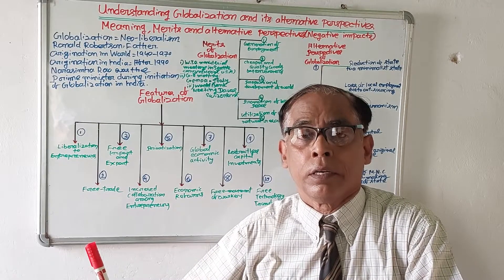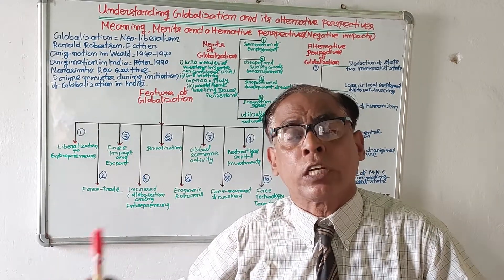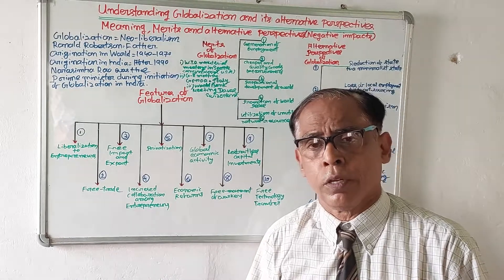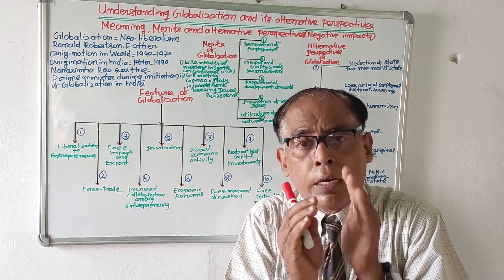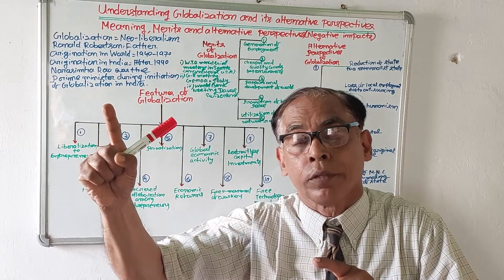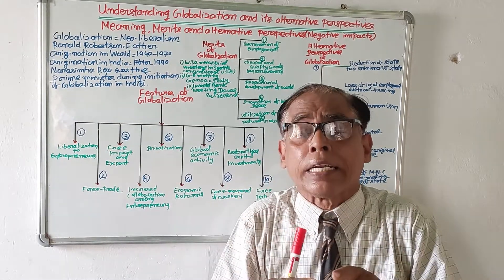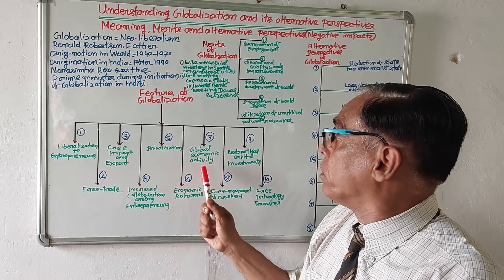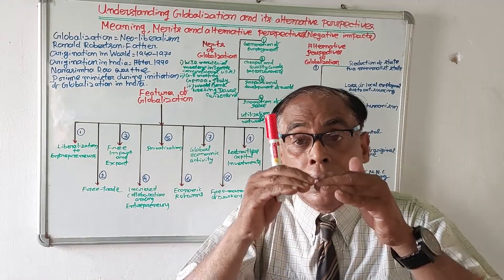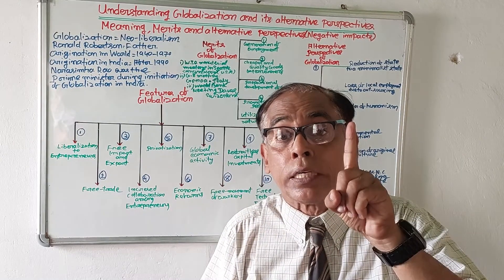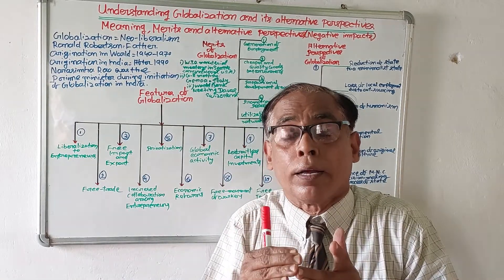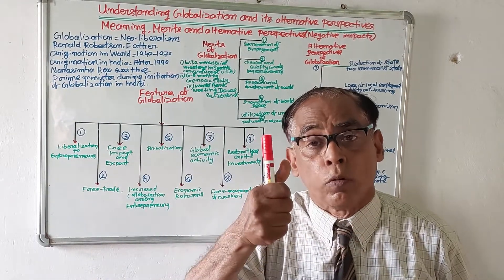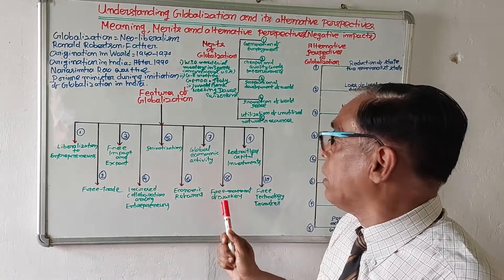The fifth feature is privatization. In globalization, privatization will be encouraged — businessmen and capitalists will be encouraged to have their own private factories, private undertakings, and private institutions. Number six: economic reforms. In globalization there will be economic reforms and the market of a country will be linked with the international market. Number seven: global economic activity — the entire market of the world will be linked with one another as a single market.